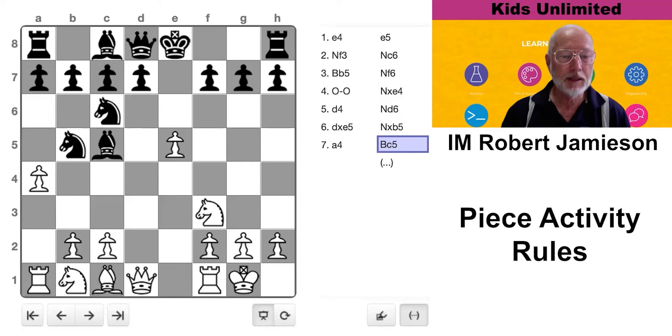They normally play knight d4 here and give me the piece back. But in this case, black played bishop c5, so I take the piece, taking the knight. Knight goes to e7.